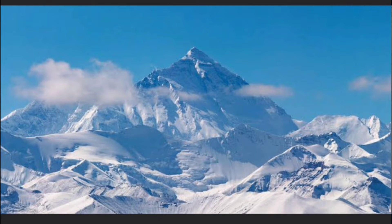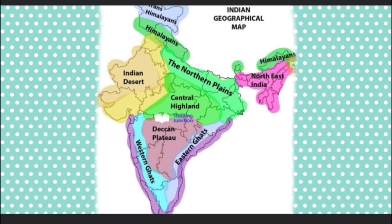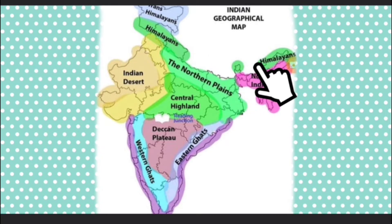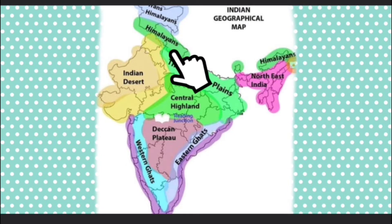There are a number of rivers in our country. The rivers of the north are different from South Indian rivers. The rivers of the north never dry up as they get water from the melting snow of the Himalayas. But the rivers of the south dry up because they depend on rain for water.